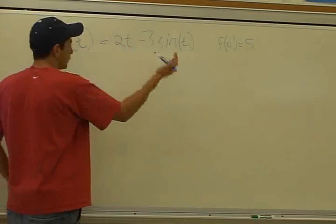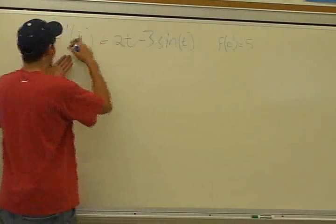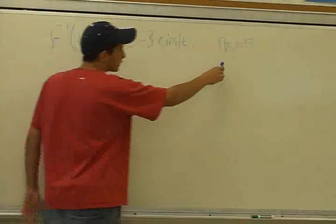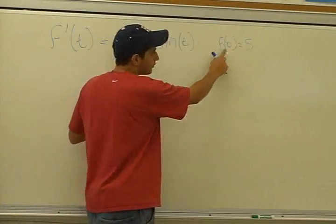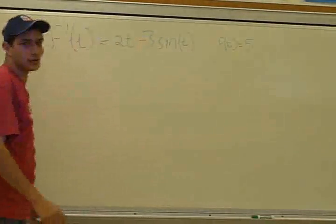So first, we would just take the antiderivative of this, which brings us back to f of t. And they also provide us with this point right here, which is f of 0 equals 5, not f prime of 0 equals 5. So this is going to come helpful later on.